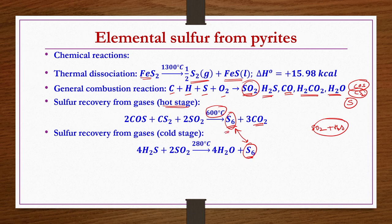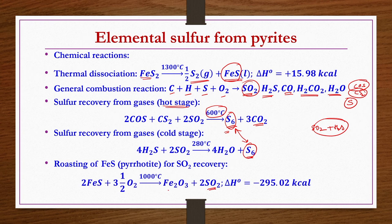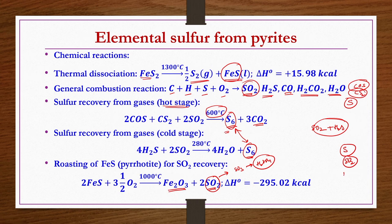The iron sulphide or pyrotite present can be granulated and roasted. Roasting of FeS yields sulphur dioxide and iron oxide (Fe2O3). This SO2 can be recovered and further converted to SO3, from which sulphuric acid is obtained. The iron oxide can be sent to steel industries for further recovery of iron.